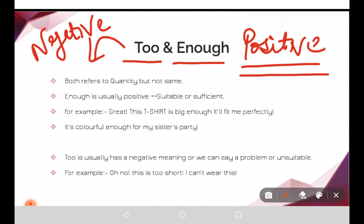For example, 'enough' in a positive situation: 'This t-shirt is big enough, it will fit me perfectly,' or 'It is colorful enough for my sister's party.' So 'enough' is used in suitable or sufficient situations. On the other hand, 'too' usually has a negative or unsuitable meaning.